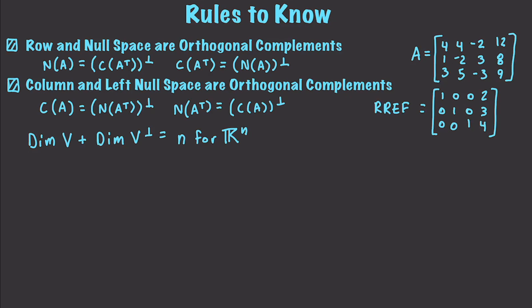And if we know this, we're going to be able to find out some other different things, such as the column space is going to have three dimensions. Also, we're going to know that the row space is going to have three dimensions, just like the column space. The null space is going to have one dimension, and the left null space is going to have zero dimensions.